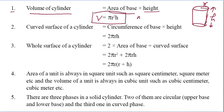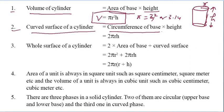Pi is 22/7 or 3.14. Now, curved surface area of a cylinder is the circumference of base into height, that is 2 pi r h.